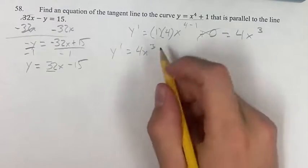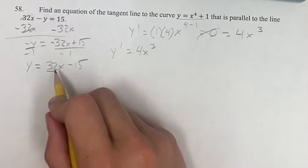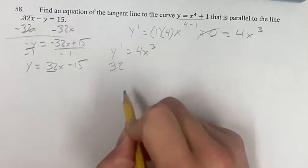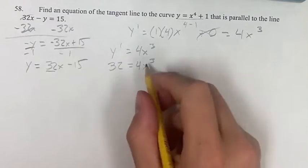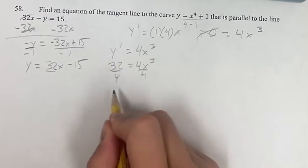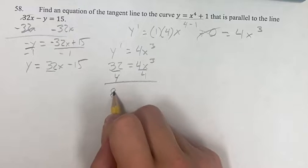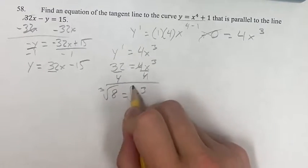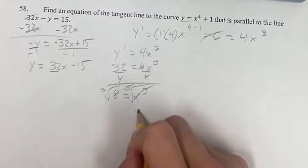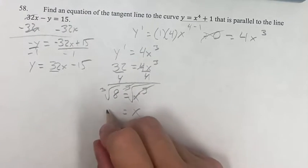And we're asked, at what value of x is this going to be equal to 32? Well, if we just plug in 32 for the derivative, since that's going to be the slope of the tangent line, now we can solve for x. Divide both sides by 4. We have 32 divided by 4 is 8. That's going to be equal to x cubed. And if you take the cube root of both sides, this cancels out and you just get x equals the cube root of 8, which we know is 2.